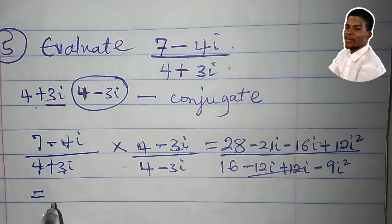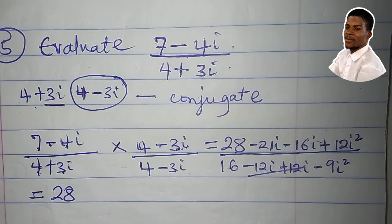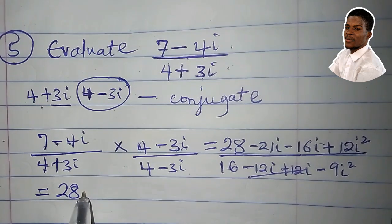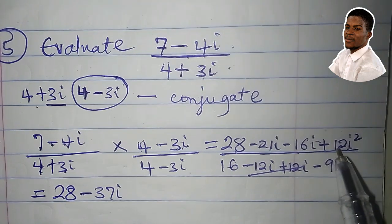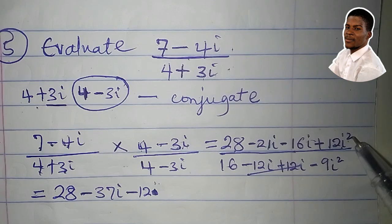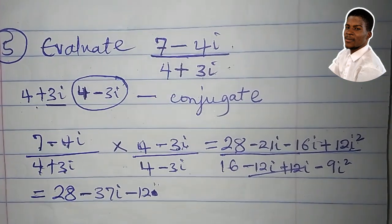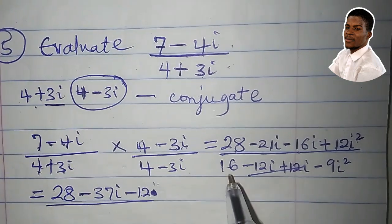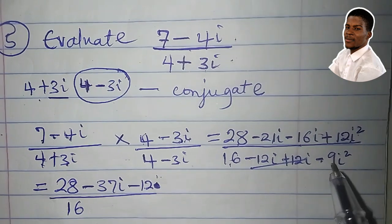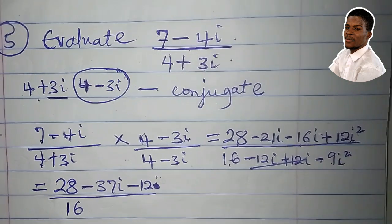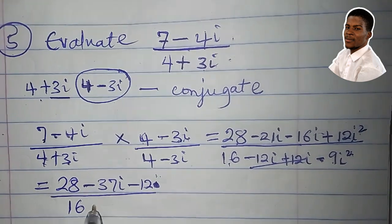We have 28. Minus 21 minus 16 is minus 37i. i squared is minus 1. So 12i squared becomes minus 12. Divided by 16. Minus 9i squared. i squared is minus 1, so minus 1 times minus 9 is plus 9.